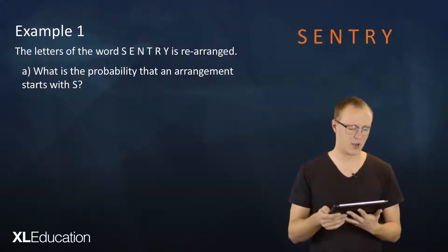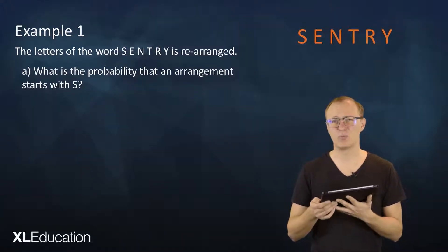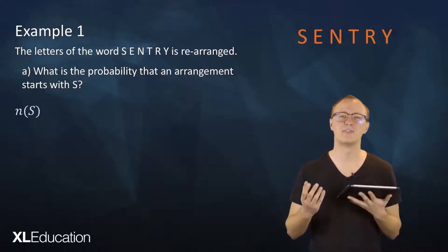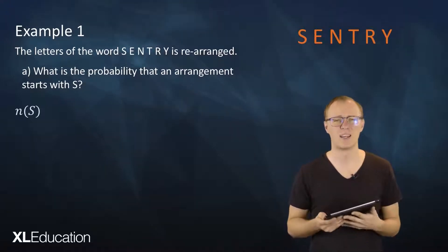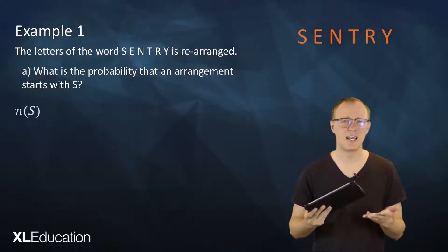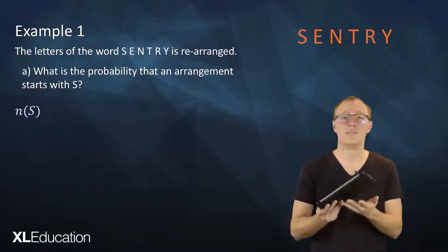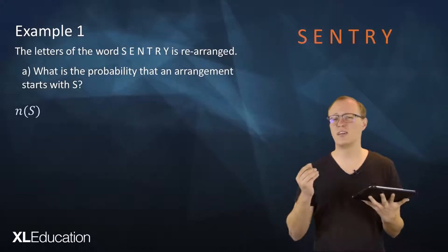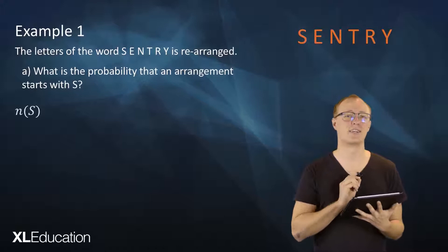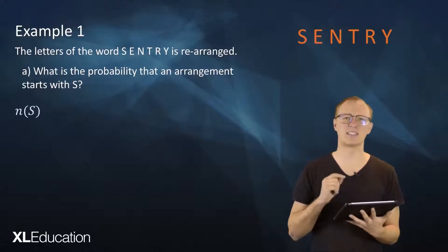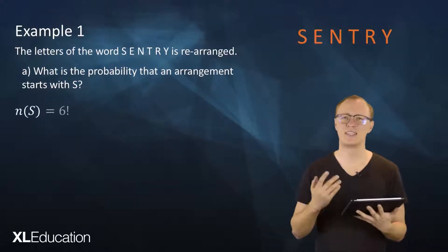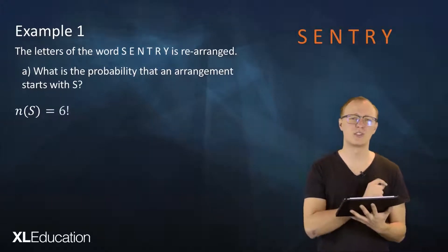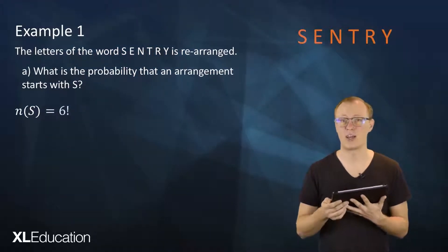Let's look at the first question. In order to calculate the probability, the first thing we need to do is find the size of the sample space. In this instance, the size of the sample space is all the ways in which we can rearrange 'century.' Because there are six letters and they're all unique, that's just 6 factorial — so there are 6! total arrangements of 'century' that are possible.